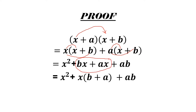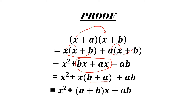In both like terms, x is the common factor. Taking out x, we are left with b plus a. Rearranging the middle term, we get x square plus (a + b)x plus ab. The b plus a is simply rearranged as a plus b, hence proving the identity: (x + a)(x + b) = x² + (a + b)x + ab.